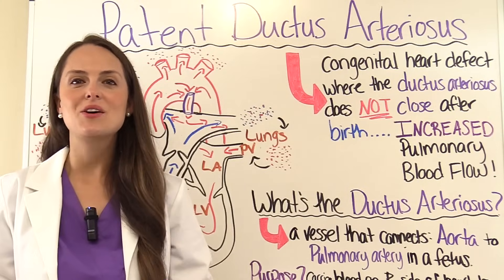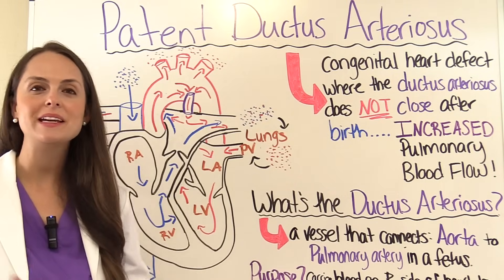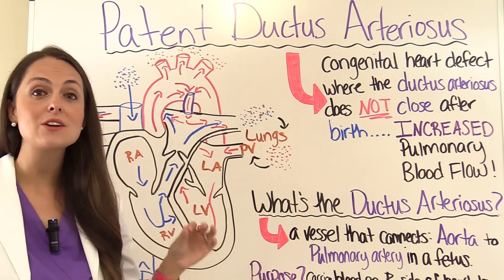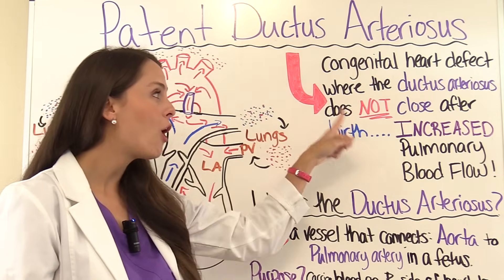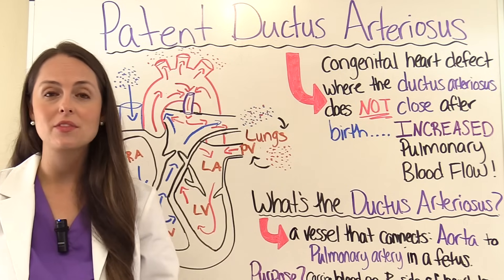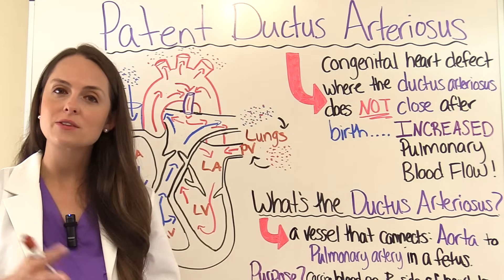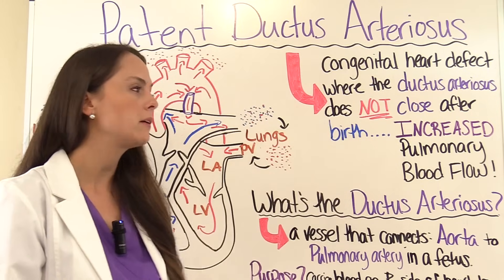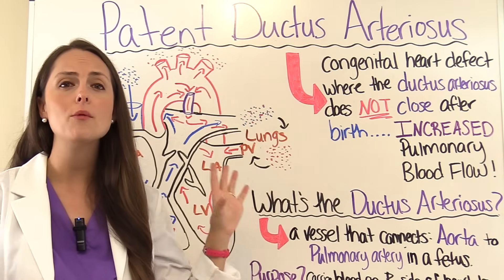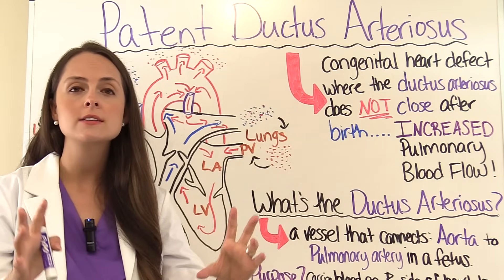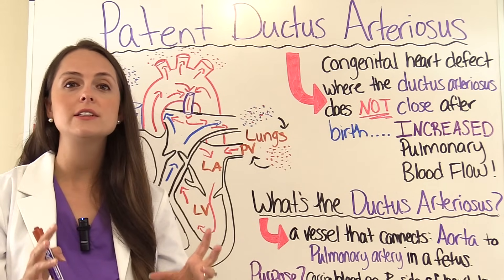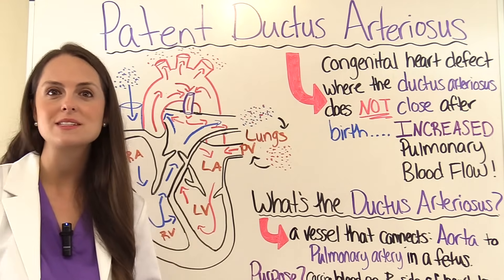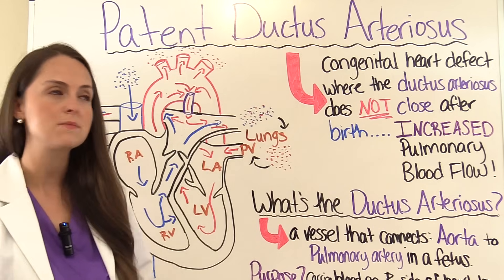What is patent ductus arteriosus, also known as PDA? It is a congenital heart defect where the ductus arteriosus does not close after birth like it should. This is going to lead to increased pulmonary blood flow — a lot more blood going to the lungs than there should be — and this is going to lead to some complications.